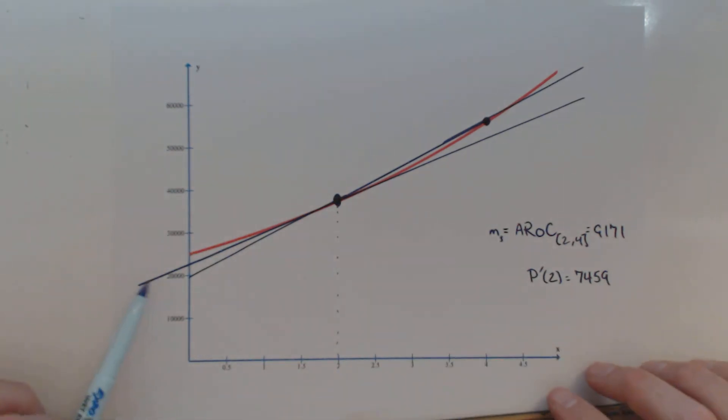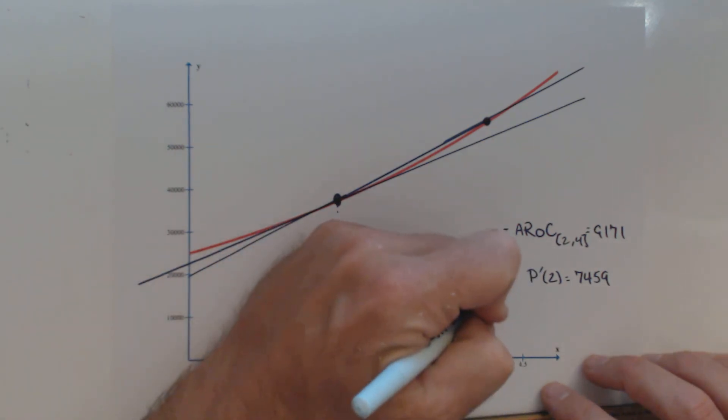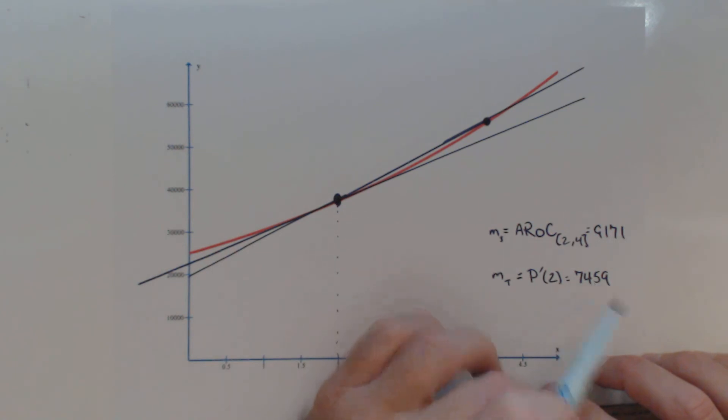Now one of the first things we'll notice is our tangent line is not as steep as our secant line. Well, look at the slope for our tangent line compared to the slope for our secant line. It's smaller. It's got a smaller slope, so it should be more shallow.